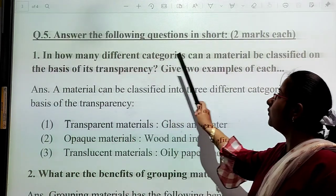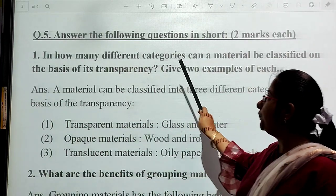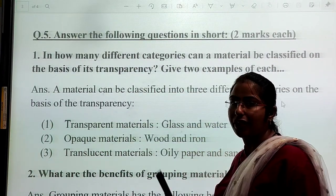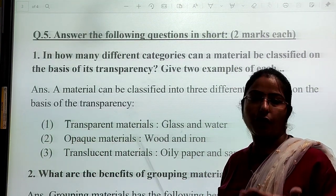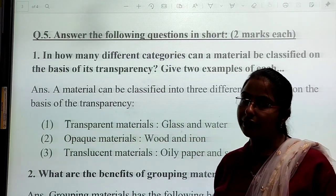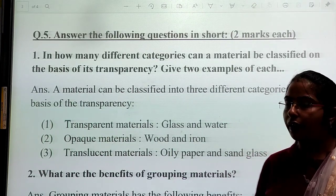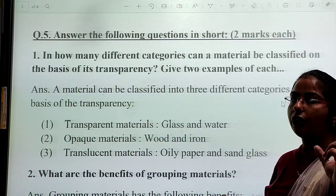Question 5: Answer the following question in short. First question: In how many different categories can a material be classified on the basis of its transparency? Transparency means you are able to see the other side of the object or material clearly.